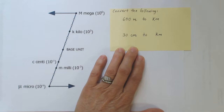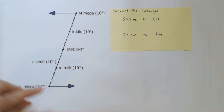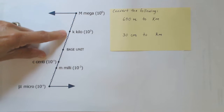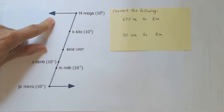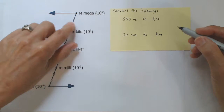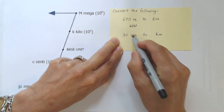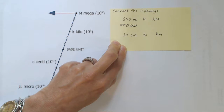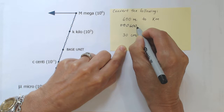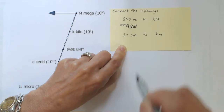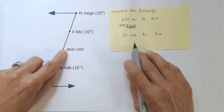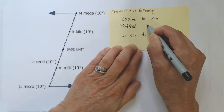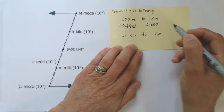Let's try some more conversions. Let's convert 600 meters to kilometers. In this case, we're going from the base unit up to kilometers — meters to kilometers — so we're going to move one, two, three decimal places, and we'll be moving the decimal point to the left. I'll write 600 and give myself some working room zeros. The decimal point is here, so I go one, two, three to the left. This converts to 0.600 kilometers.